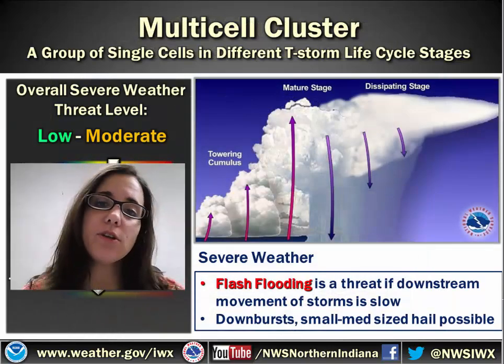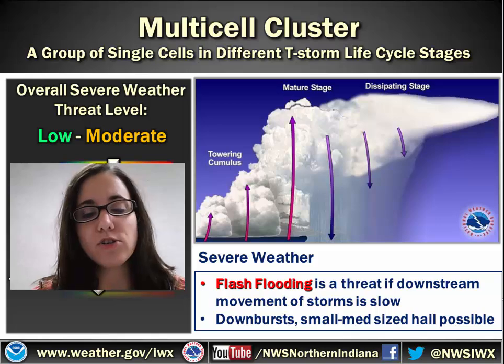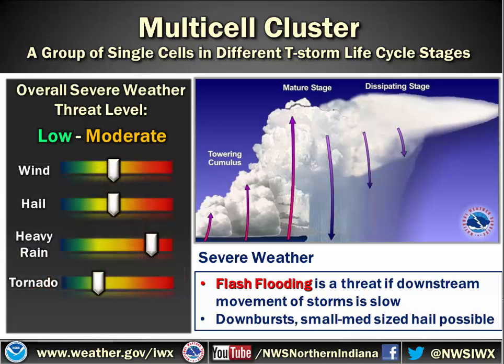A little further down the spectrum, you have a multi-cell cluster. This is basically a group of single cells in different thunderstorm life cycle stages. In this case, low to moderate is your threat, and again it's going to depend on your environment whether you get severe weather or not. Wind and hail is the main threat because there's a group of those single cell storms. Heavy rain can also be a more significant threat with multi-cell clusters, because if there's some kind of stalled boundary like a front, you could get thunderstorms to keep redeveloping along that line and stay generally in the same spot. That can cause flooding if the downstream movement of those storms is very slow. Tornado threat with these is generally pretty low.